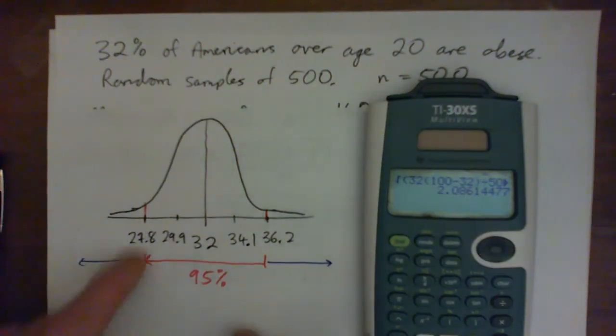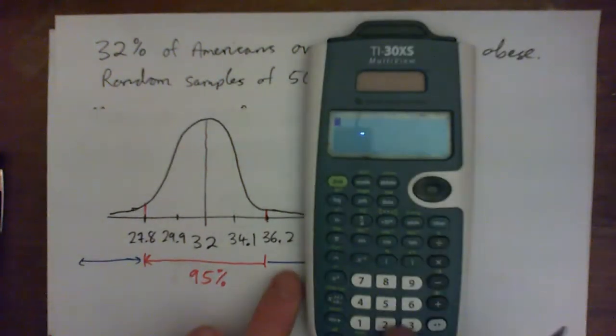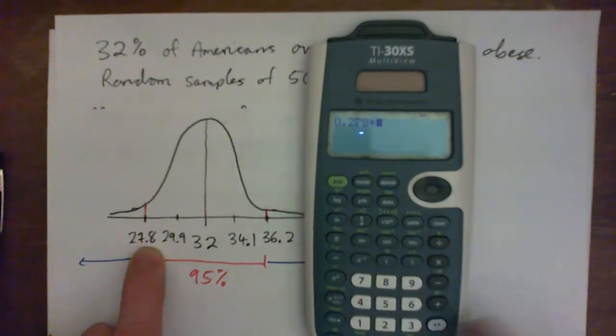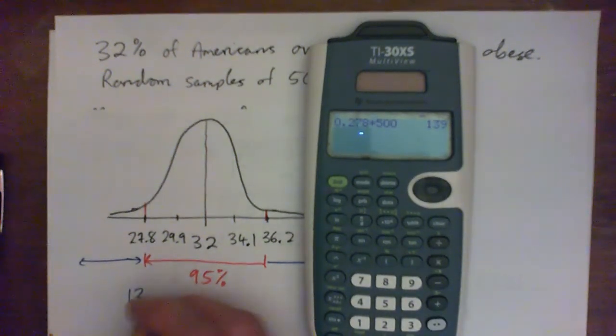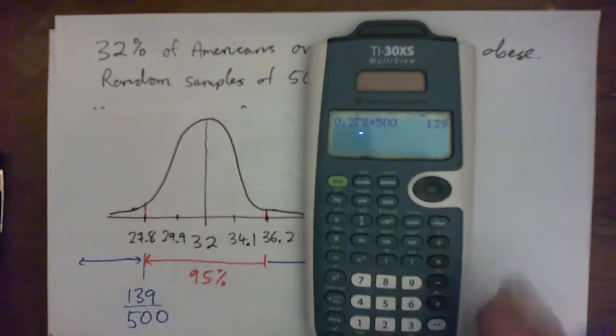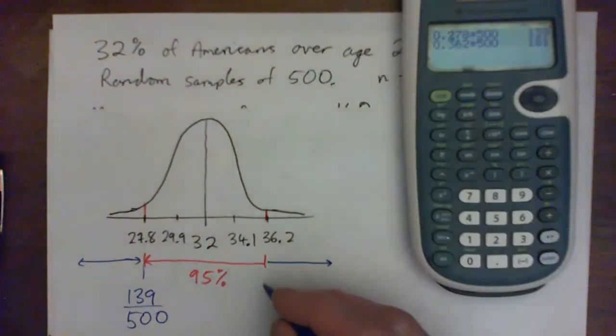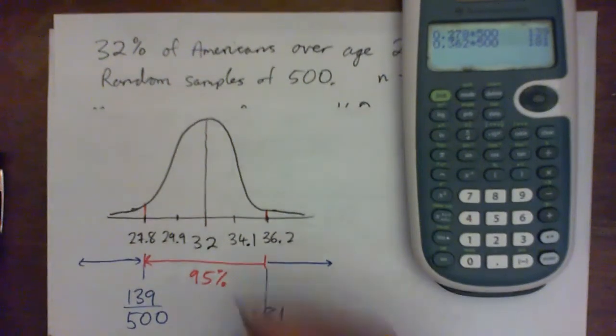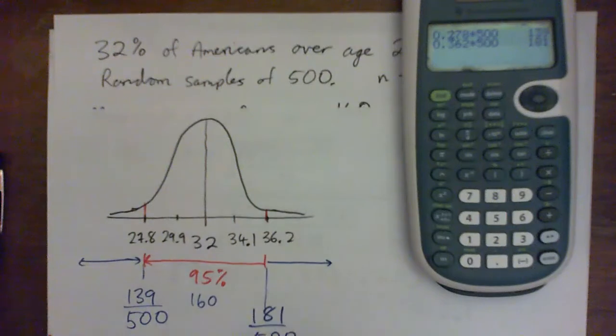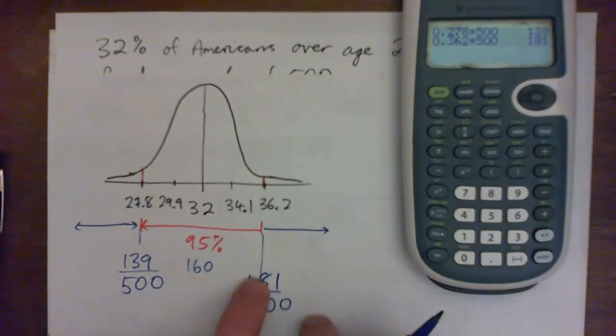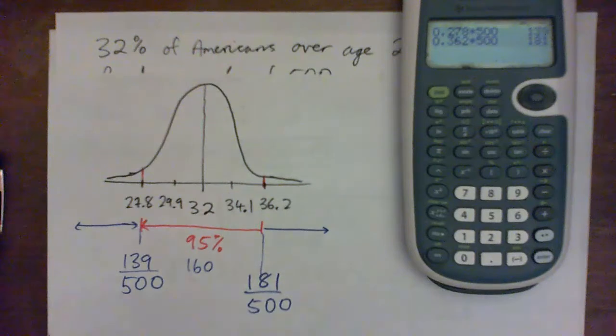We expect groups of 500 people to be between 28 and 36%, and I just can't help beating this to death. So that's actually 27.8. I just can't help going 0.278 times 500, because that's 139 people out of 500. And I just can't help myself going 0.362 times 500, and that's 181 people. So the mean is 160 or 32%, and anything less, so out of random groups of 500 people, less than 139 obese is a big deal, and more than 181 obese is a big deal. In between there is what we would call normal or to be expected.